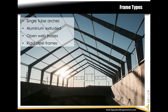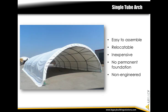In all fabric structures, the fabric is supported by some type of metal frame. The frame system dictates the design options available for the finished structure. The simplest frame style is the single tube arch, consisting of single metal tubes bent in a half-circle shape, typically spaced every four to six feet. Single tube arch buildings are very easy to assemble and relocate, can be purchased inexpensively at a big-box store, and usually don't require a permanent foundation. These buildings are not engineered to support loads and are best used for temporary or small-scale applications such as a garden shed or carport.